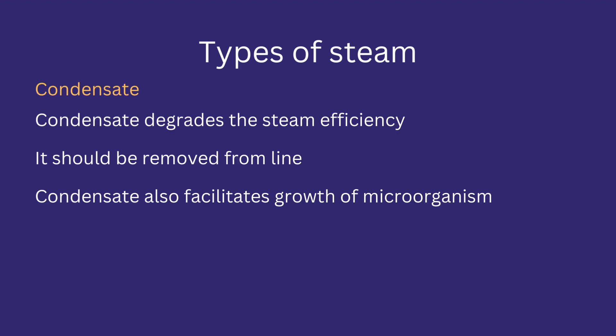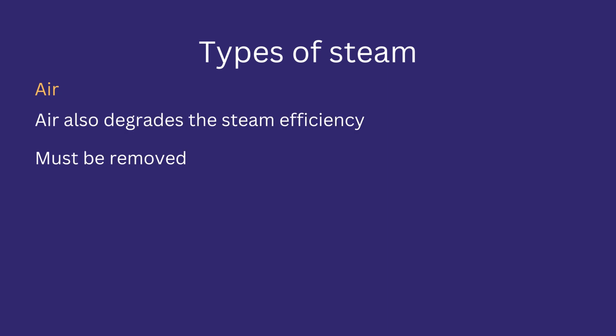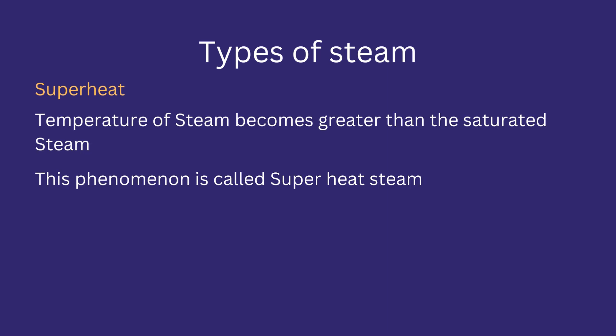Condensate is liquid in the steam that has not been converted into steam and degrades the heating efficiency. Condensate also facilitates the growth of microorganisms and should be removed from the line. Air also degrades steam efficiency, results in energy wastage, and must be removed. Superheat in steam occurs when its temperature becomes greater than that of saturated steam.